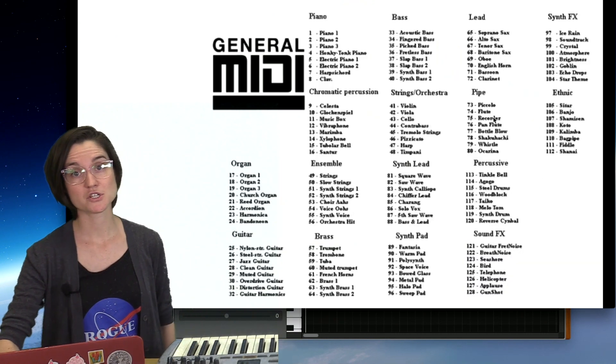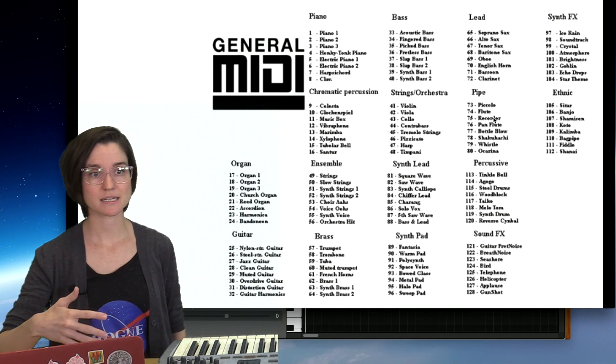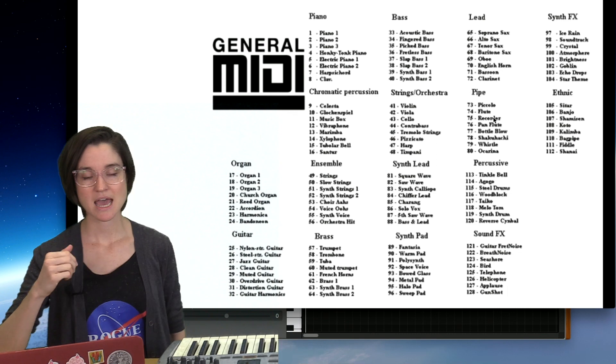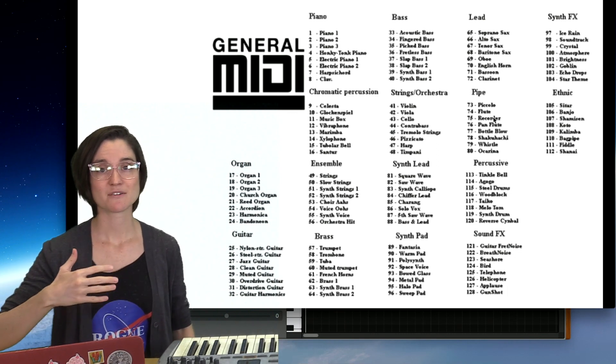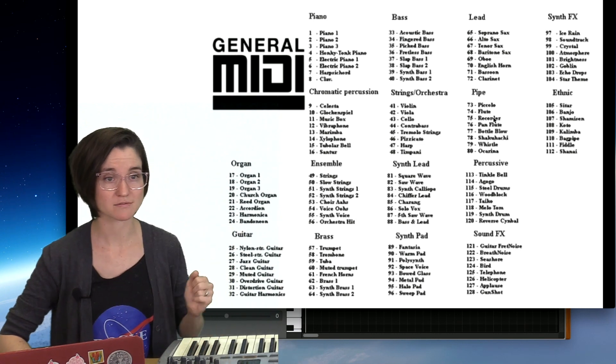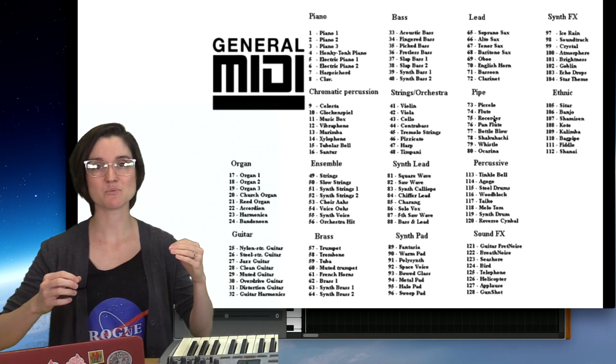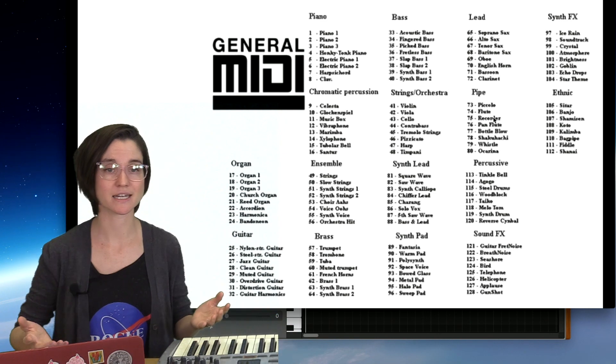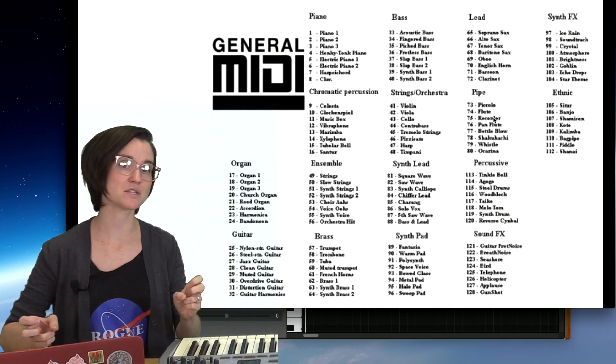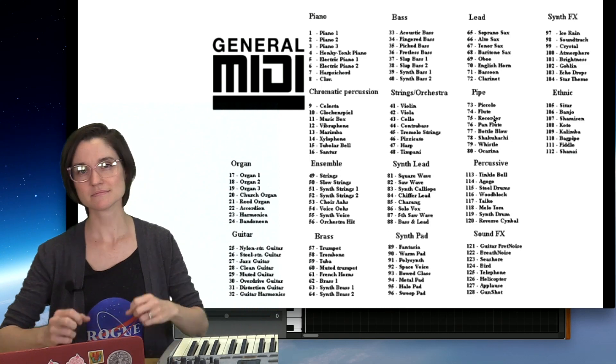Part of the general MIDI standards is this list of 128 instruments. And these are all standardized so that, for example, if you ask for sample 41, which says violin, it will sound like a violin, and not like, say, sample 97, which says ice rain synth.